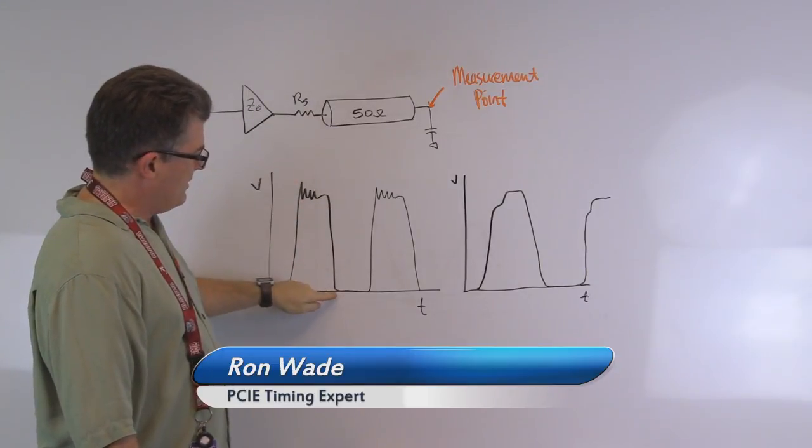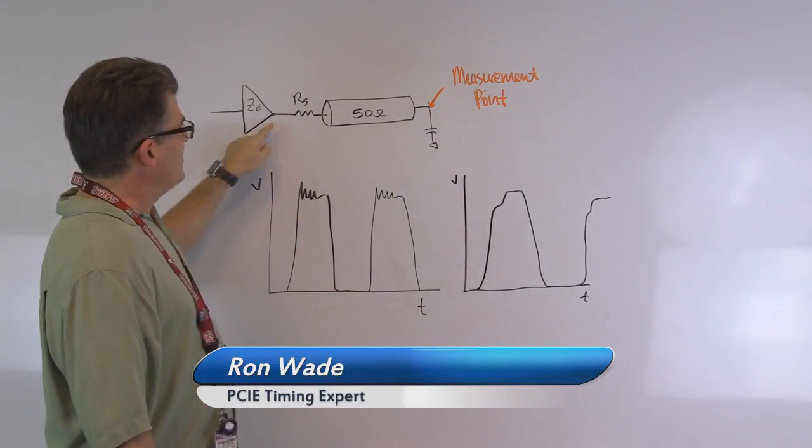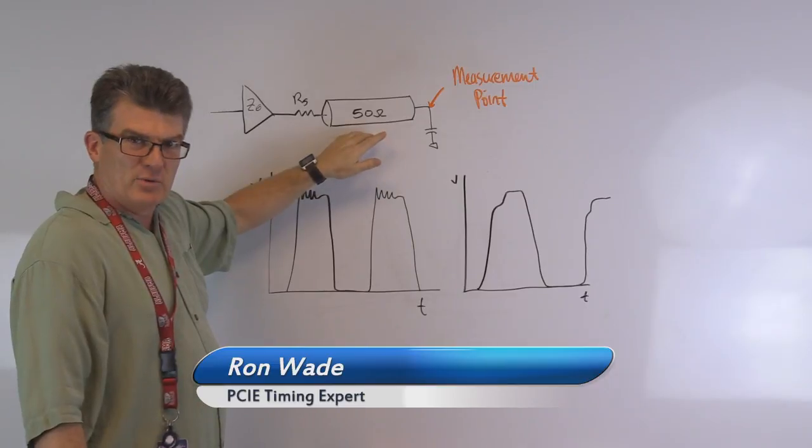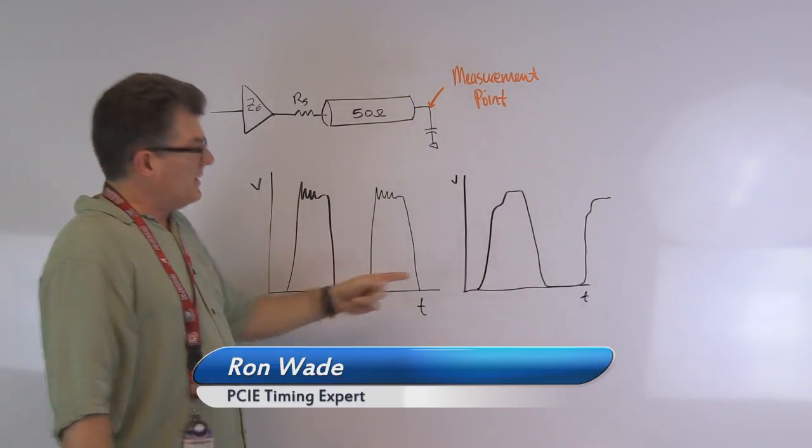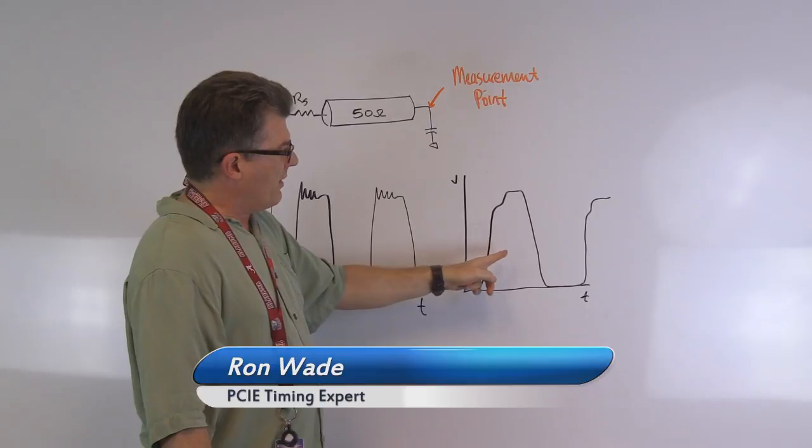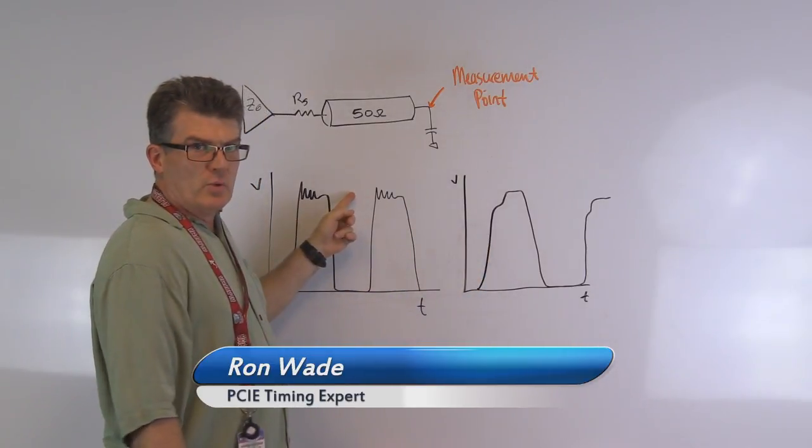Whereas when it's pulling down, the way it's drawn here, the impedance plus the resistor is exactly equal to 50-ohms. The other thing you might see is a waveform where instead of having ringing on one of the edges, you have a step on one of the edges.